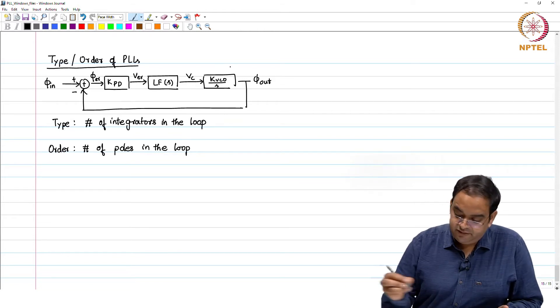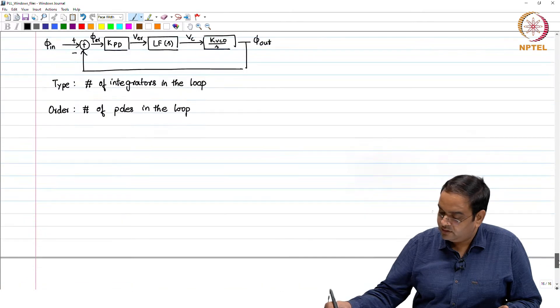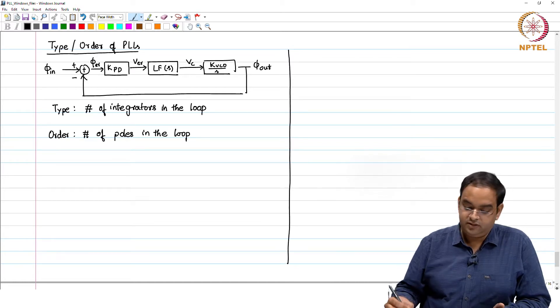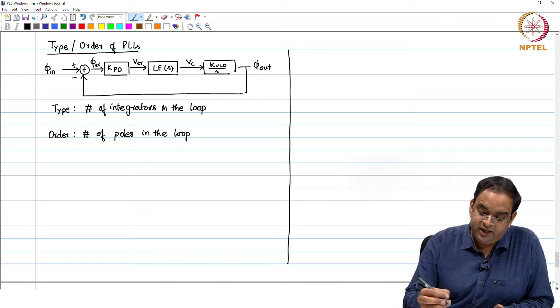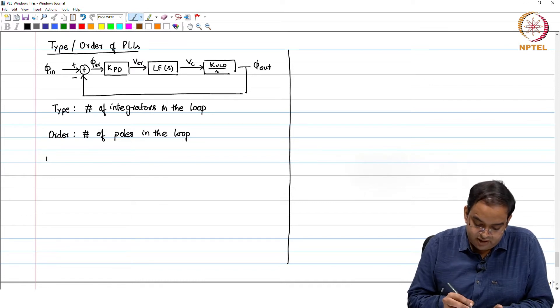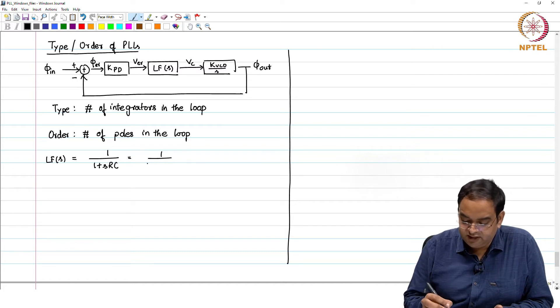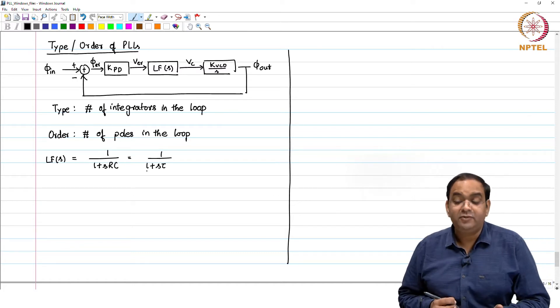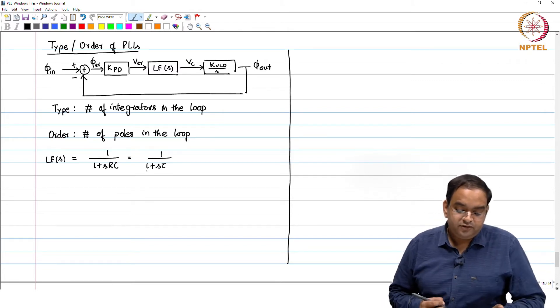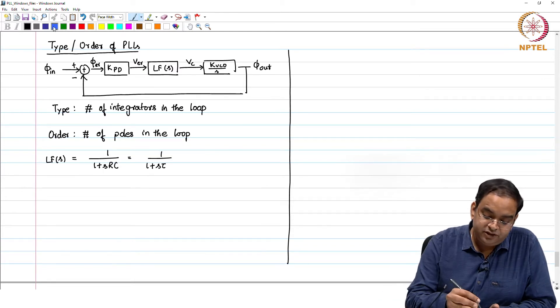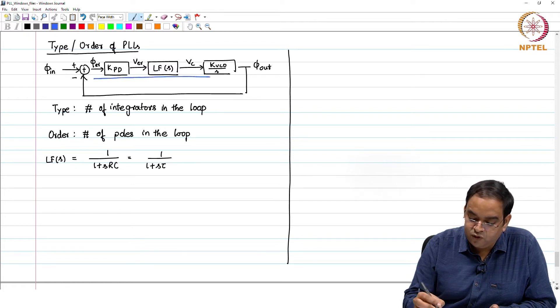If we consider the simple PLL which we saw earlier, that particular PLL was having this same block diagram. In that particular simple PLL which we have seen, our loop filter of S was equal to 1 plus SRC. Normally, I can also write this as 1 plus S tau, the time constant. If this is the case, the method, the way you are going to find out, is first you find the loop gain of the PLL.